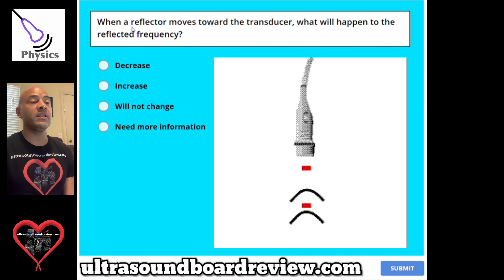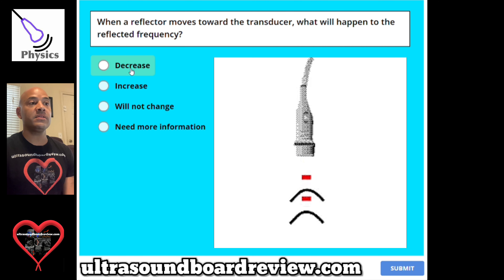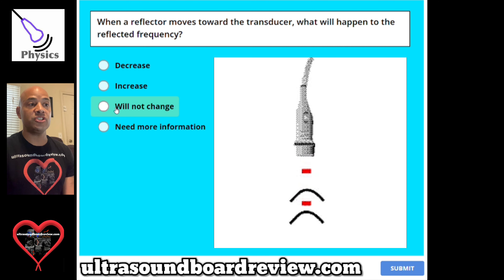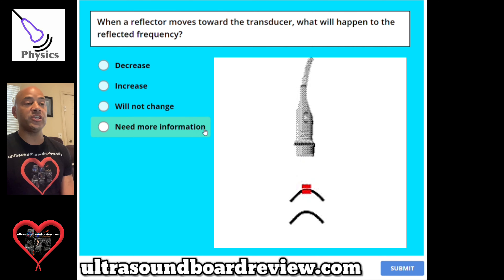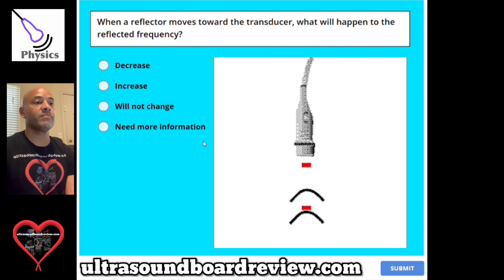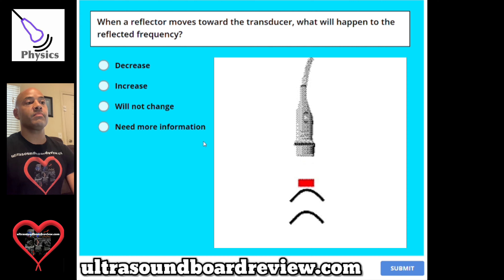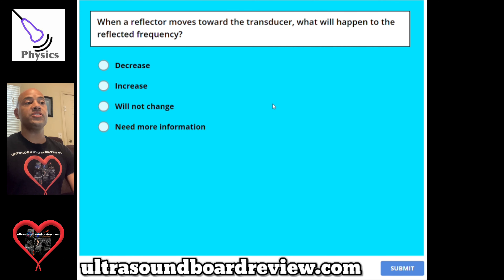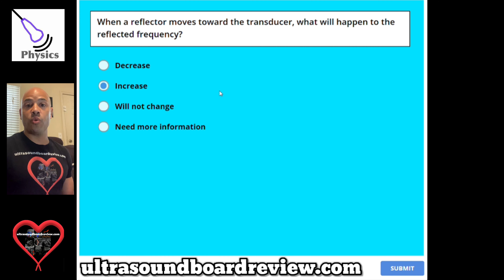Question 115. When a reflector moves towards the transducer, what will happen to the reflected frequency? A, it will decrease. B, it will increase. C, will not change. Or D, need more information. The answer is B, increase. Anytime a reflector moves towards the transducer, you have a positive Doppler shift, and this will increase the reflected frequency.